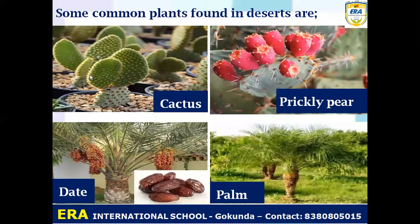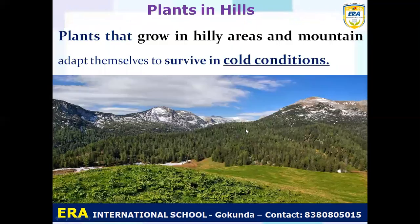Let's look at some examples of desert plants. First: cactus. Second: prickly pear. Third: red — which we can eat and is very sweet. And fourth: palm. These are examples of desert plants.